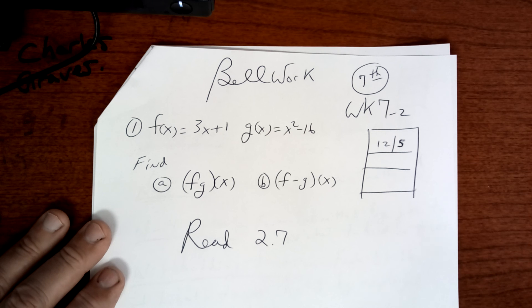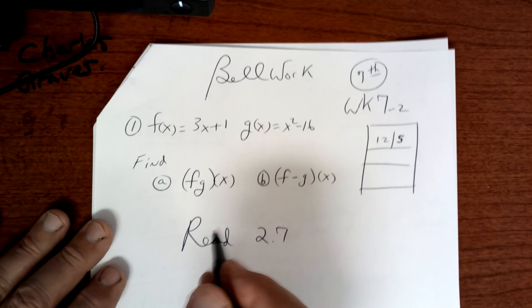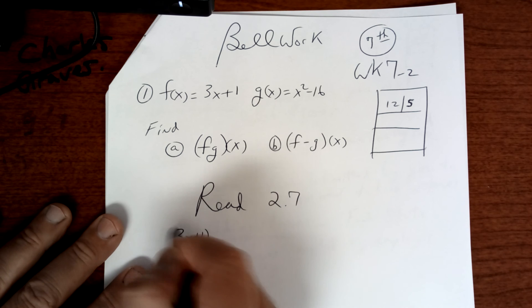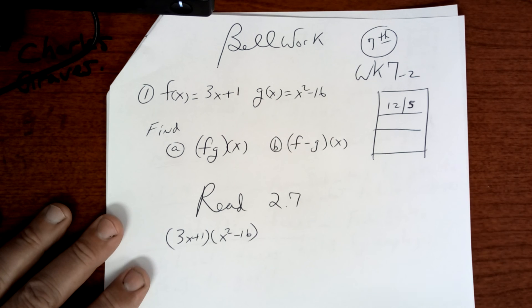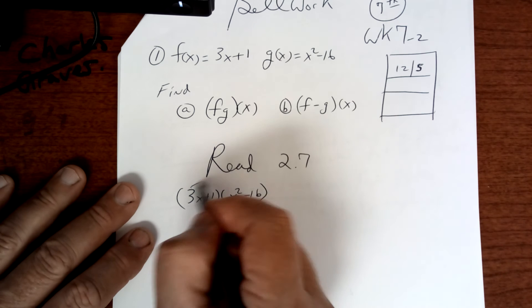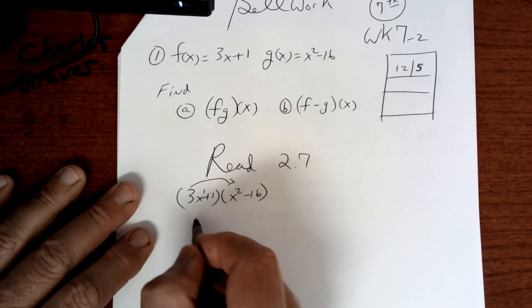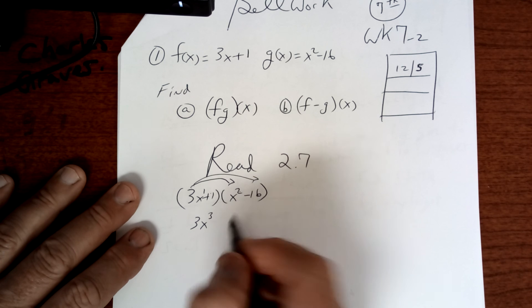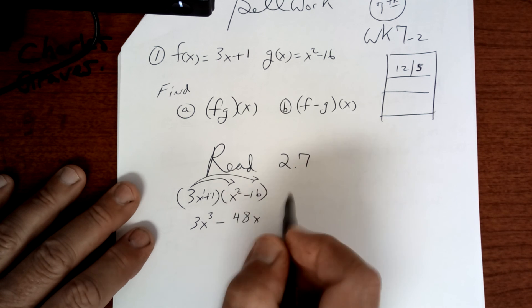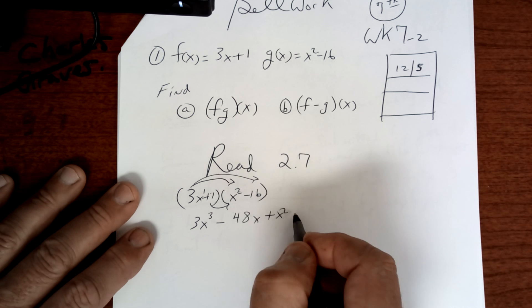So, you have a function you're multiplying these two. So, you're going to take 3x plus 1 times x squared minus 16. And you're going to have to do FOIL. So, you're going to multiply this times this. And you've got to add your exponents here. So, it's going to be 3x minus, I think that's going to be 48x. And then you go to this one. It's going to be plus x squared and then minus 16.